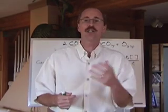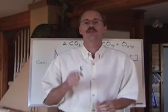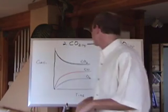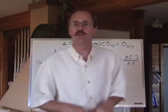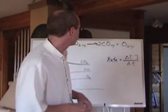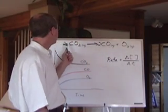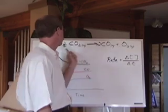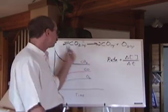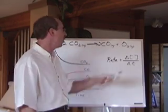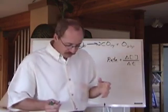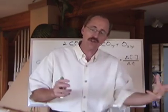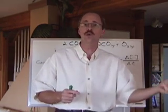Chemical kinetics deals with the rate of reactions. Let's take a certain equation and elaborate on what we're talking about in terms of rates. The decomposition of carbon dioxide into carbon monoxide and oxygen goes according to this balanced equation: 2CO₂ → 2CO + O₂. Let's say we start off with a quantity of CO₂ and turn it into CO and O₂.